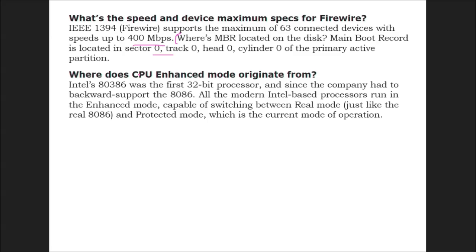Where does CPU enhanced mode originate from? Intel's 80386 was the first 32-bit processor, and since the company had to backward support the 8086, all the modern Intel-based processors run in the enhanced mode, capable of switching between real mode and protected mode, which is the current mode of operation.